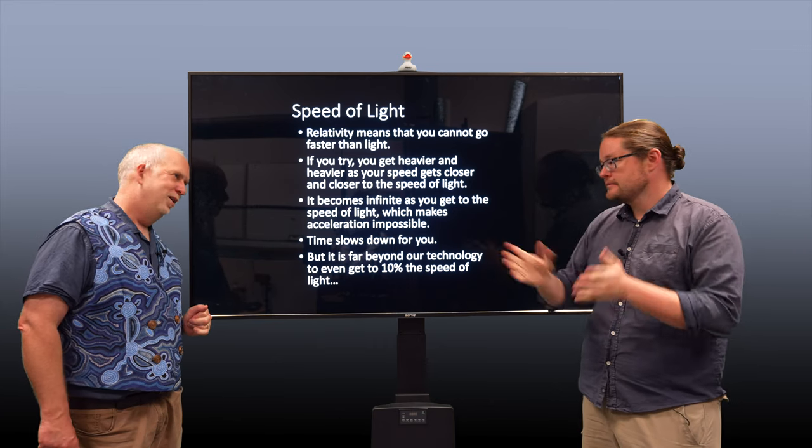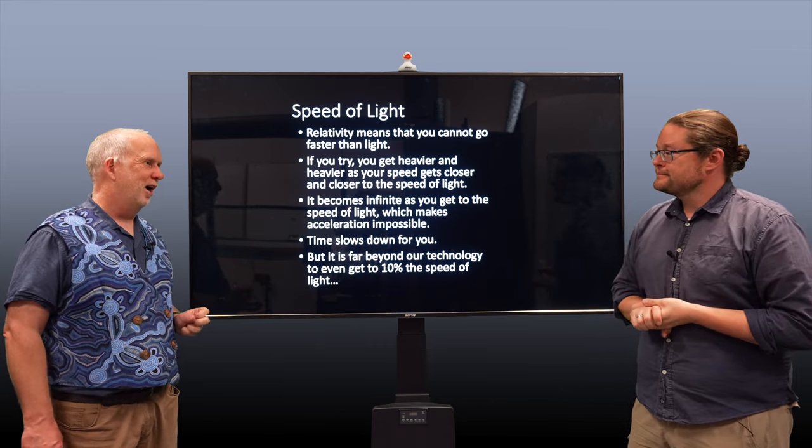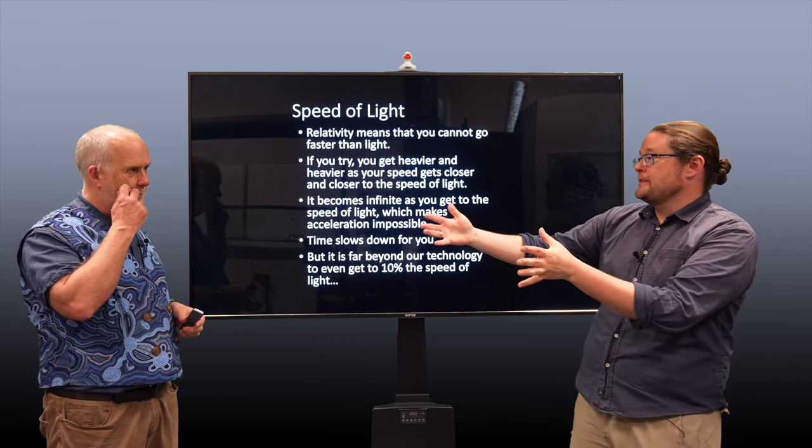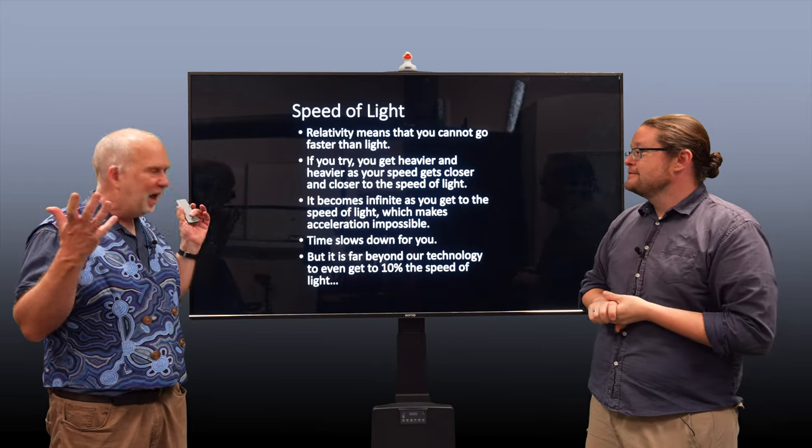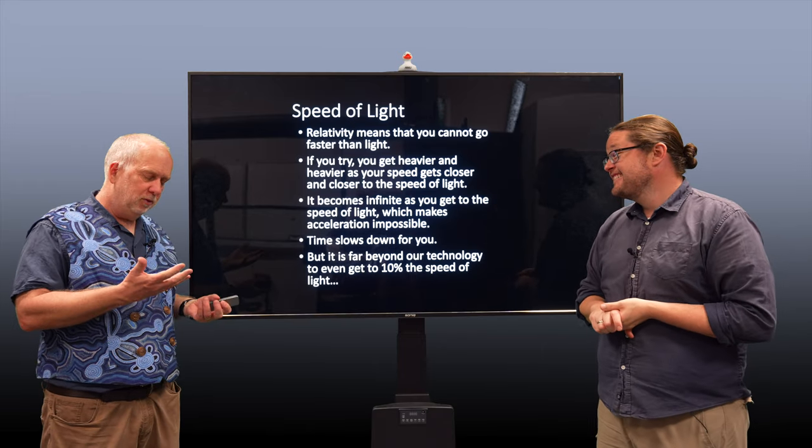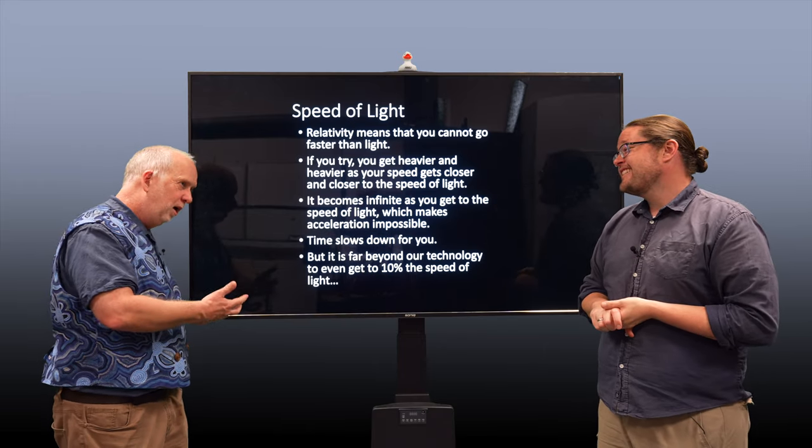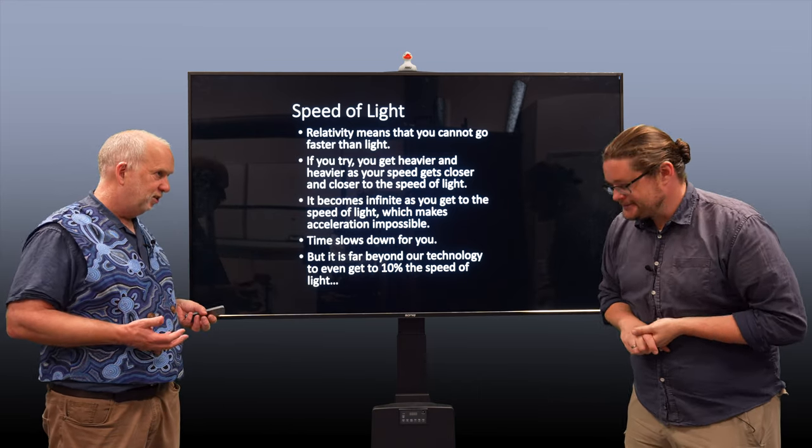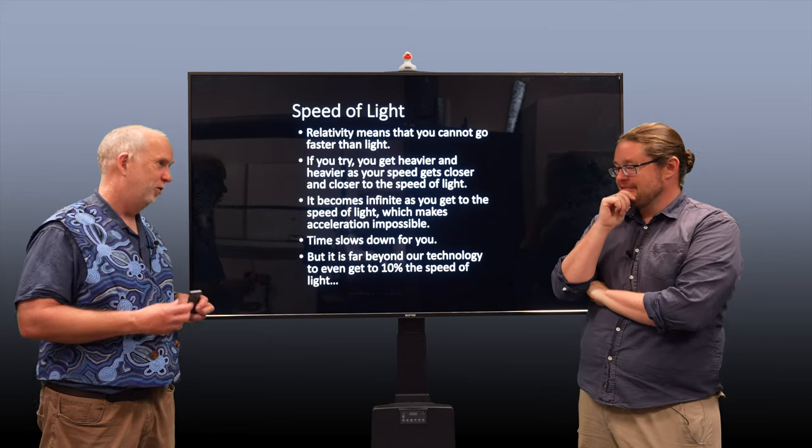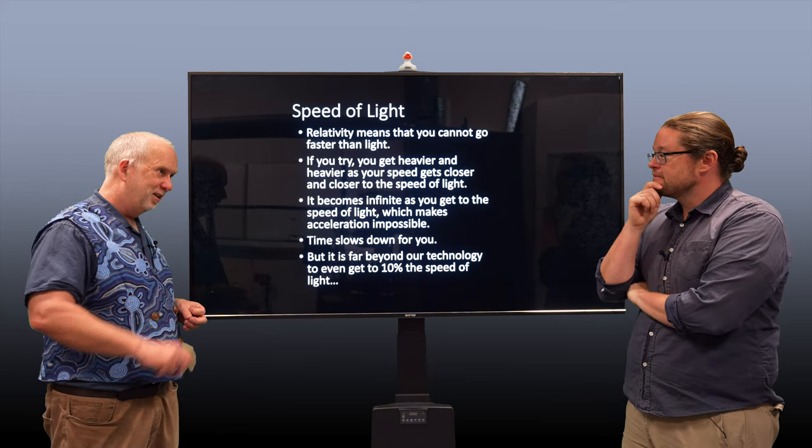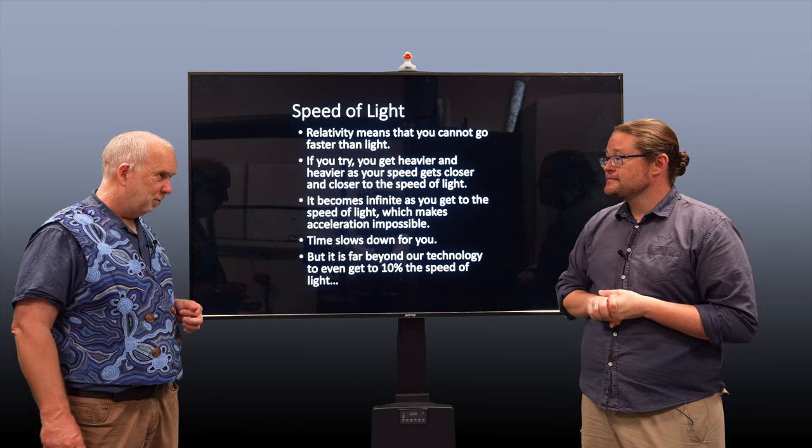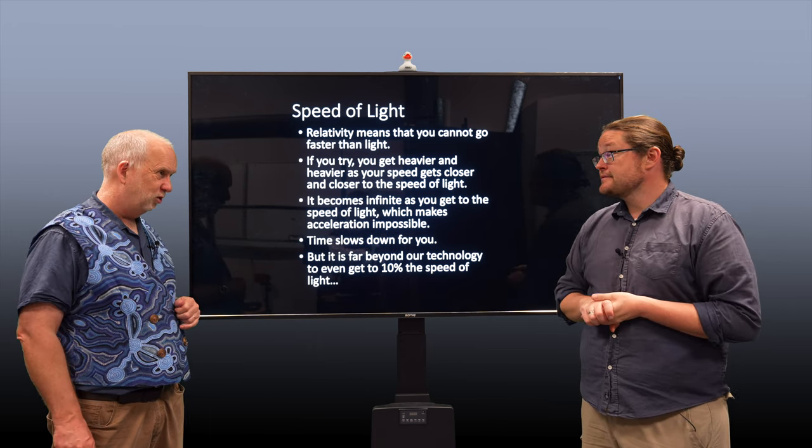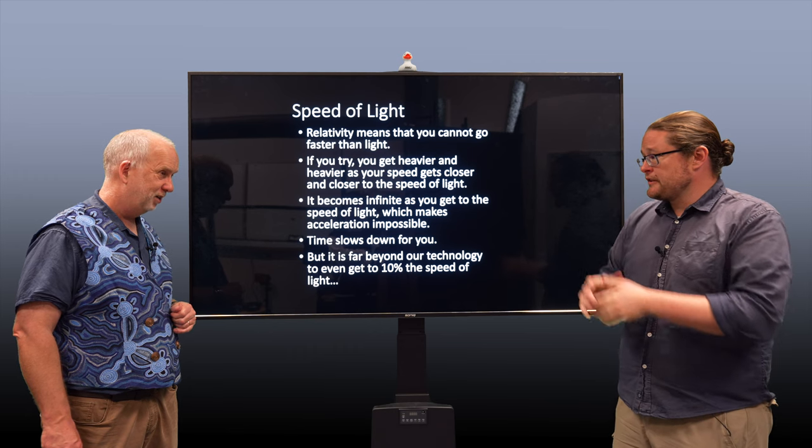But if somehow you could get close to the speed of light, there are relativity starts being important. So what if we got to like 80% the speed of light? That would help. Who knows how we could possibly do that? But there is one thing that helps you and one thing that hurts you. The thing that helps you is when you get close to the speed of light, time for you slows down. So if you're going at 99% of the speed of light, your time is going much slower. Even though it might take four years to get to Proxima Centauri, you might only think a few months have passed.